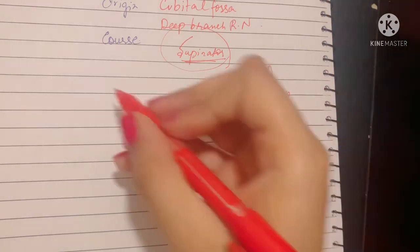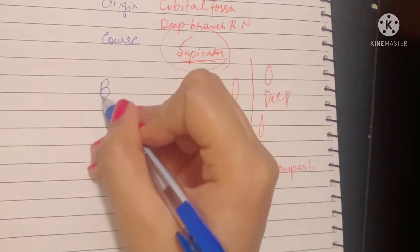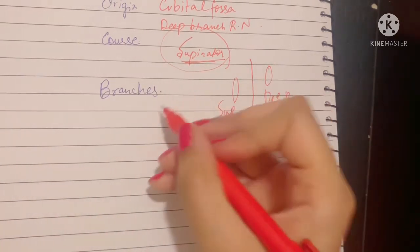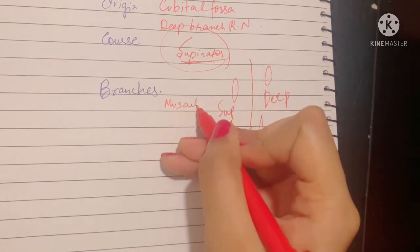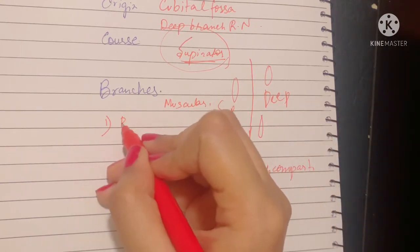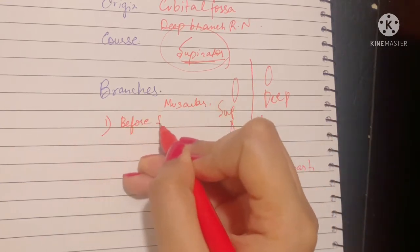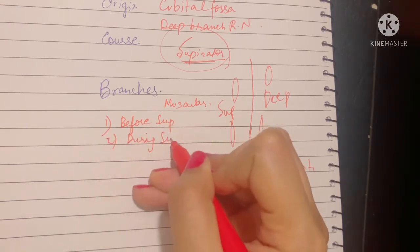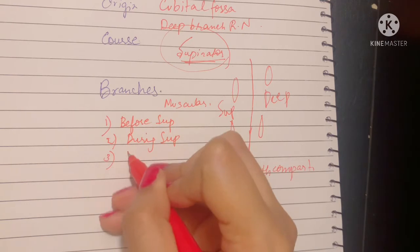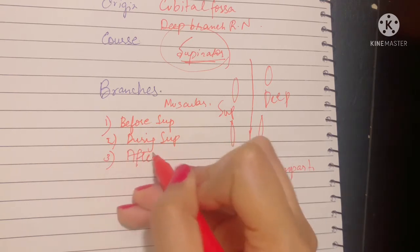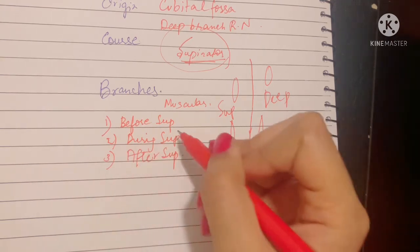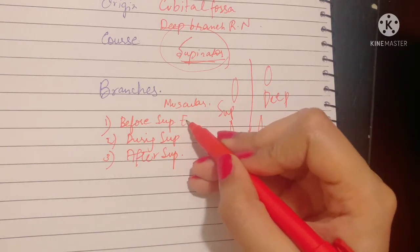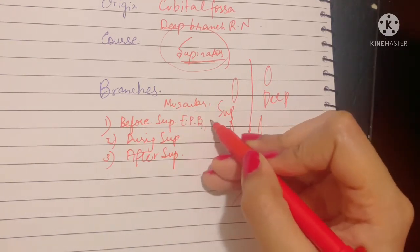What are the branches? Let's talk about the branches of the posterior interosseous nerve. It gives muscular branches before piercing the supinator, during the supinator, and after it emerges from the supinator. That's of significance. Before it pierces the supinator, it gives branches to the extensor carpi radialis brevis and the supinator.